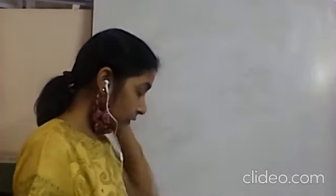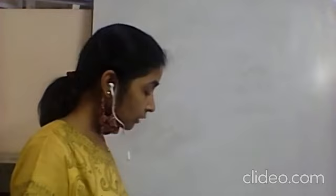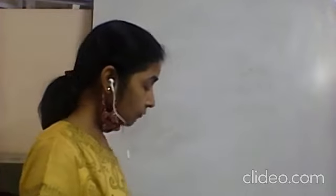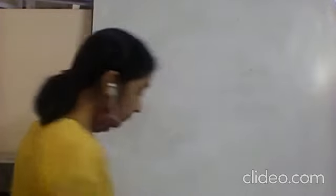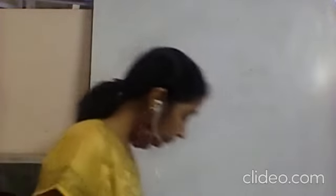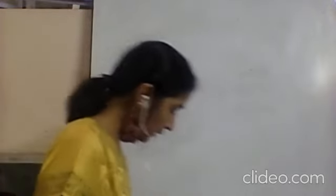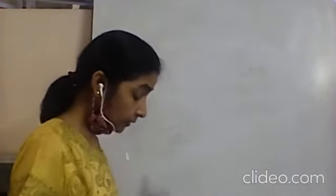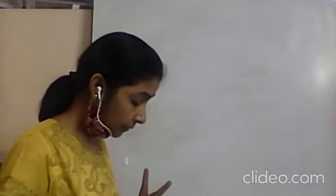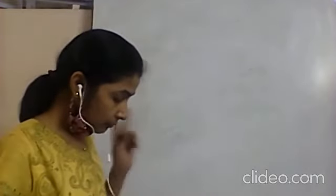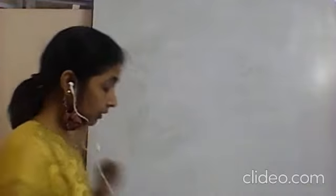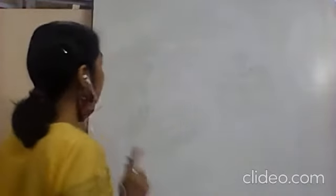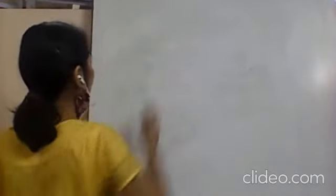Fourth question: The circumference of a circle is equal to the perimeter of a square — find the ratio of their areas. What we are given is a circle and square comparison by perimeter. So first let us write down the formula of both.